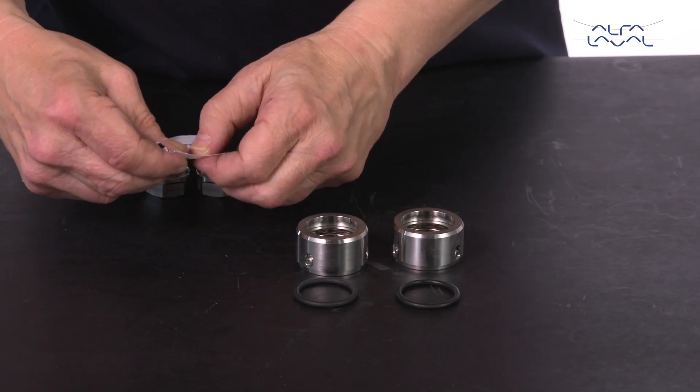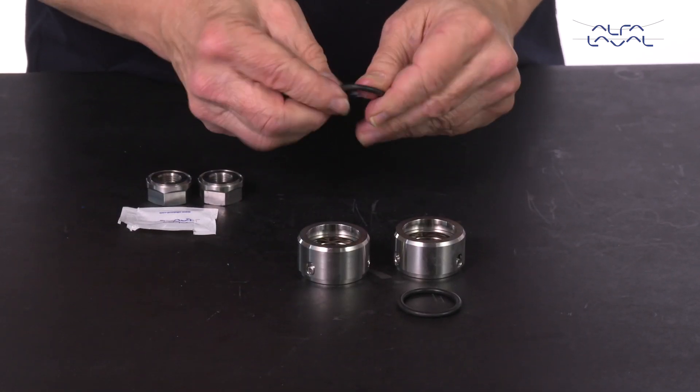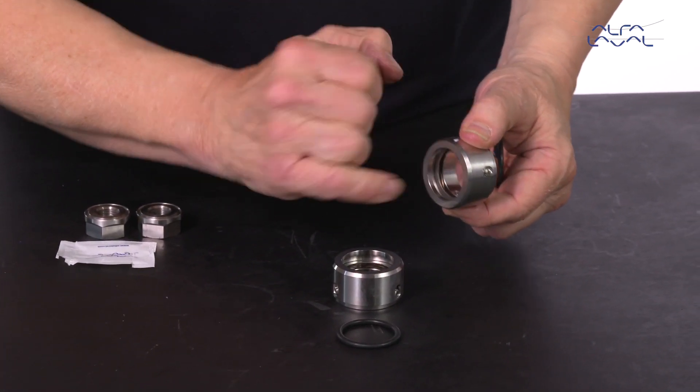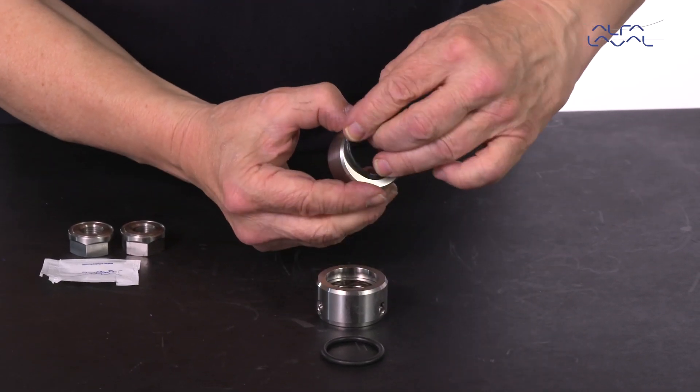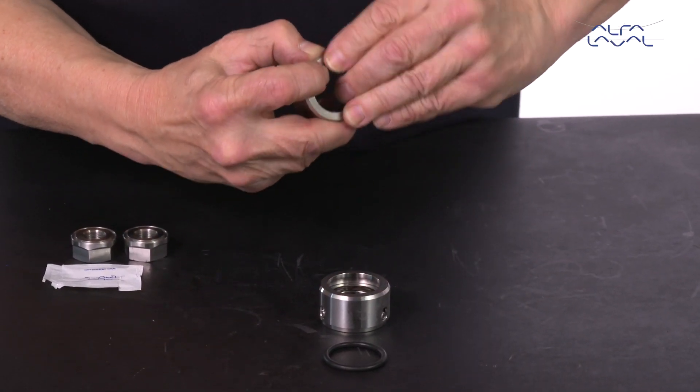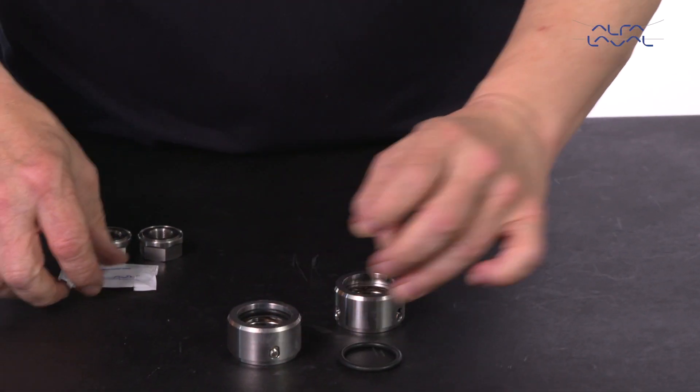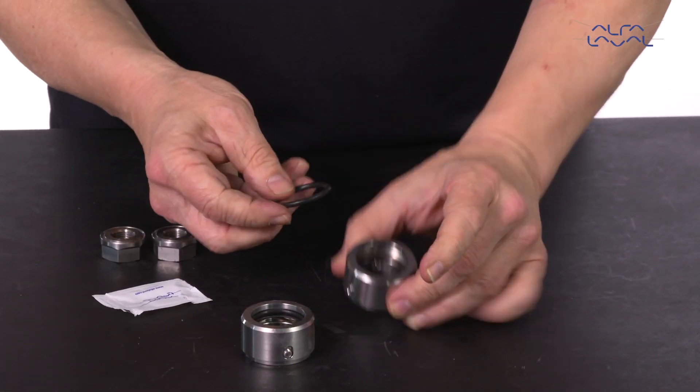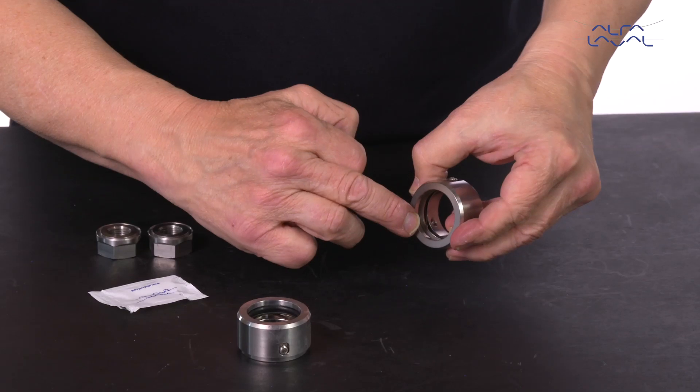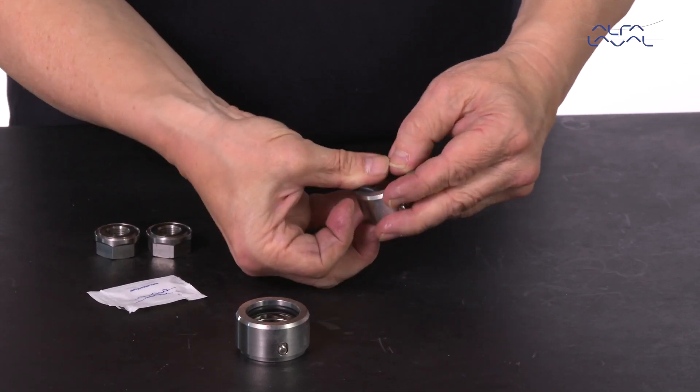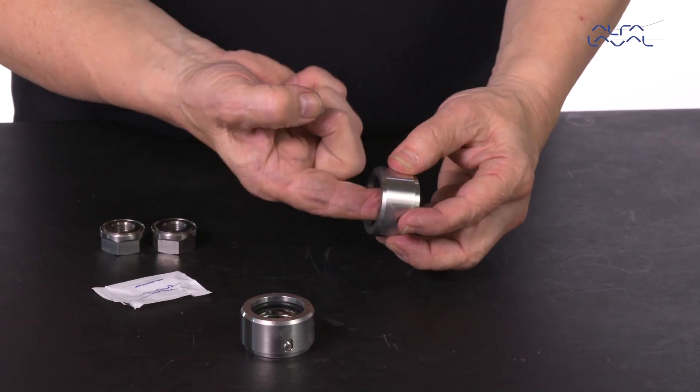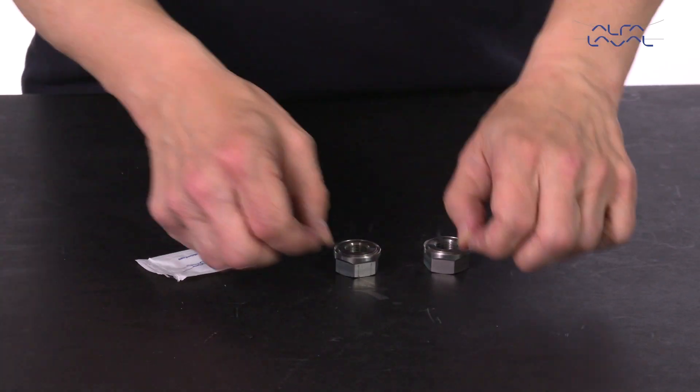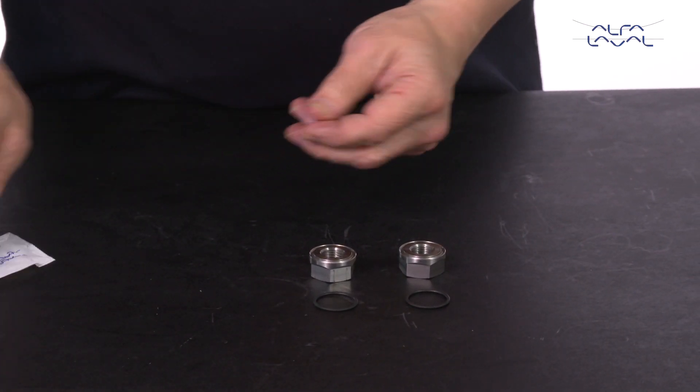Next, replace the O-rings in the rotating shaft seals. Next, replace the O-rings in the other end.